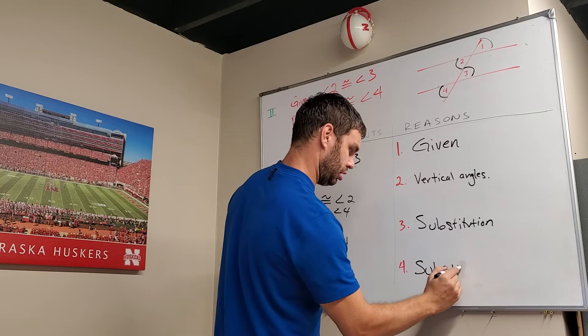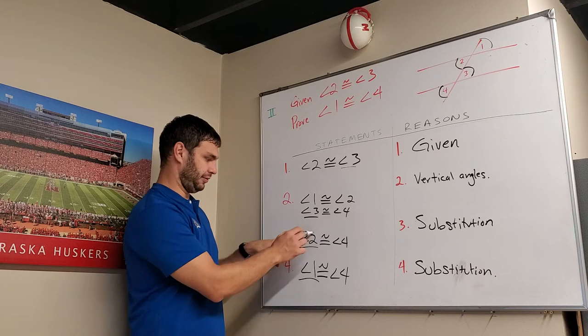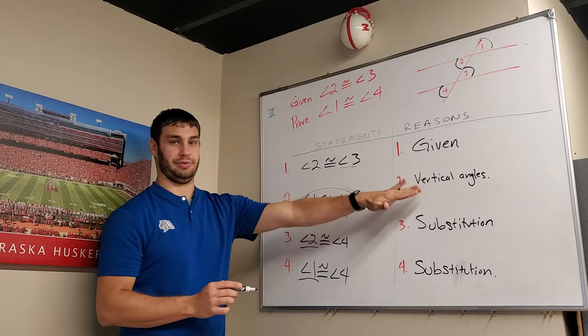Substitution. So again, the way I found that, real quick, is the only difference between step 3 and step 4 is that this was a 2 and it was a 1. If I need to find somewhere where 2 is congruent to 1, I found that up in this statement because of the vertical angles. So if I replace it, anytime you replace something, remember, we use substitution.